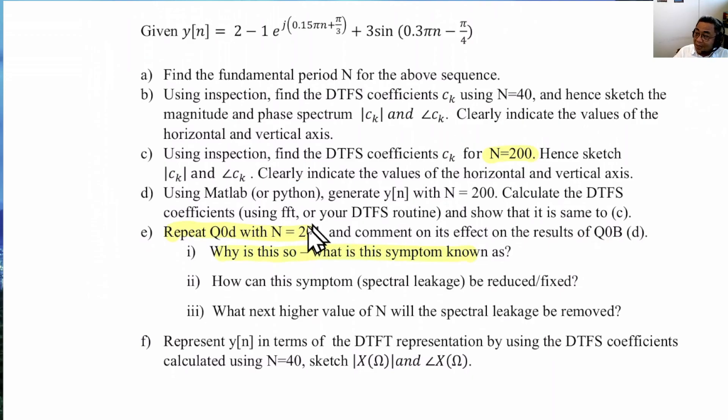But when we use n equals to 201, these terms, especially 0.15 pi and 0.3 pi, do not land exactly at integer values of k. And spectral leakage will occur.